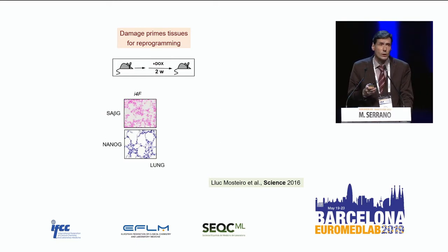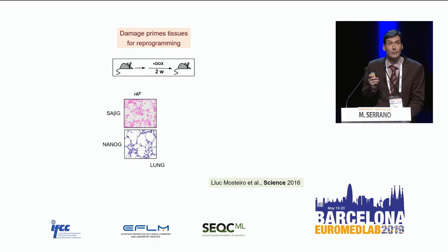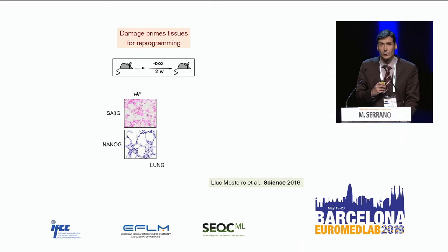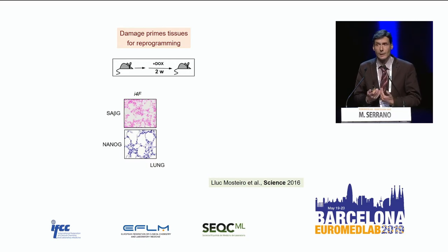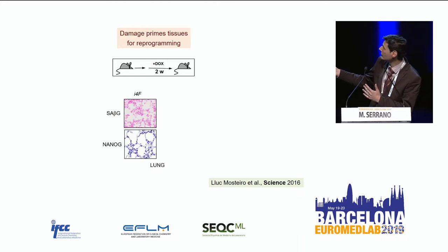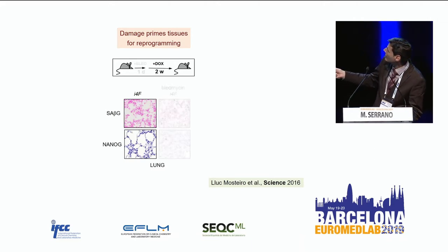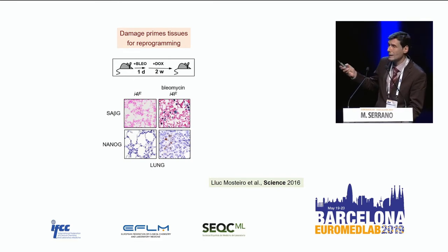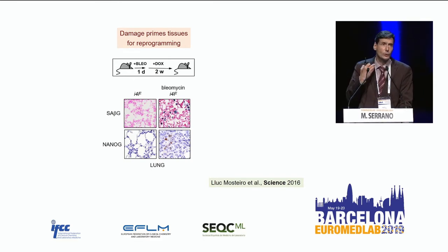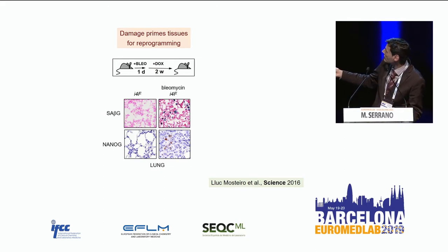We don't observe reprogramming in the lung. When we examine the lung, we find that the Yamanaka factors, although expressed, are not producing damage — the lung is very resistant to damage induced by the Yamanaka factors. Beta-galactosidase staining is negative, and therefore there is no reprogramming. So: no damage, no reprogramming. To test this, we produced ectopic damage in the lung chemically with bleomycin. Now we have a lot of senescence in the lungs, and now we have reprogramming — the damage creates the right environment for reprogramming to happen.